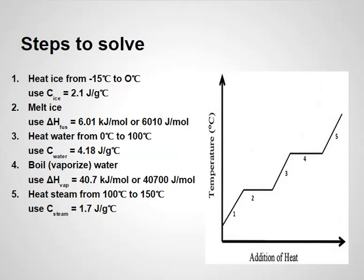There are actually five steps we'll use to solve this problem. Step one: calculate how much energy is required to heat the ice from the sub-zero temperature to the melting point. Step two: calculate the energy needed to fully melt the ice from all solid to all liquid. Step three: heat that liquid water from zero to 100 degrees Celsius. Step four: figure out how much energy converts all the liquid water into steam. Finally, step five: calculate the energy involved in heating that steam from 100 Celsius to 150 degrees Celsius.